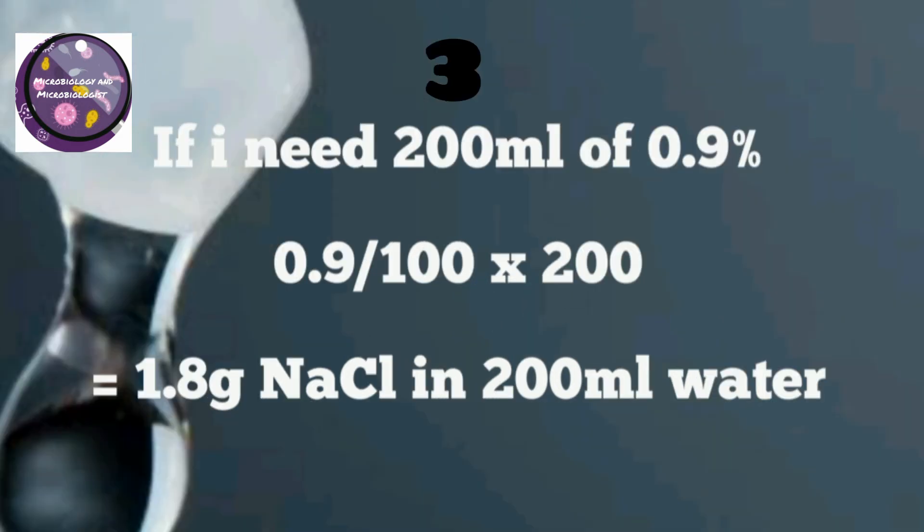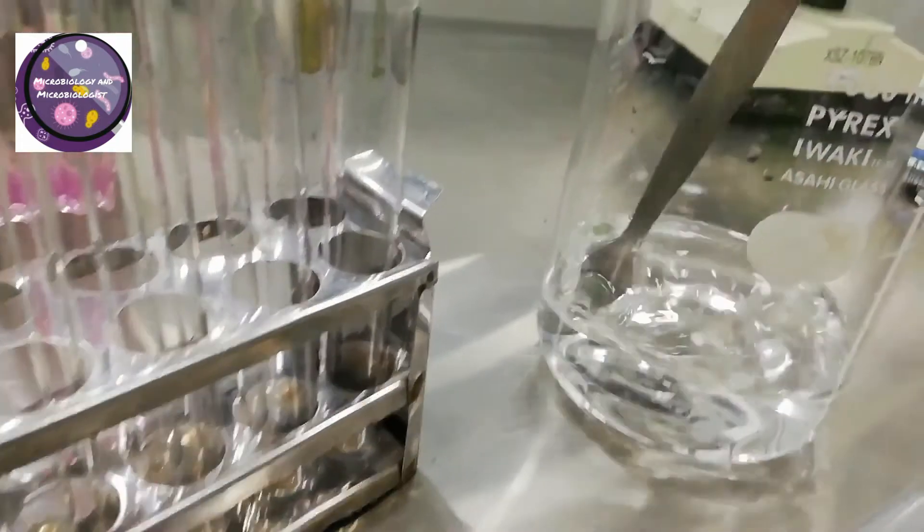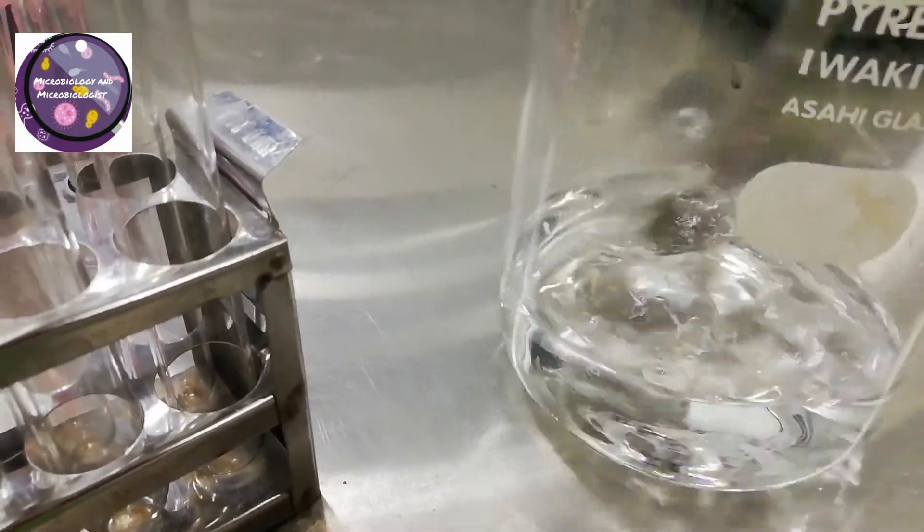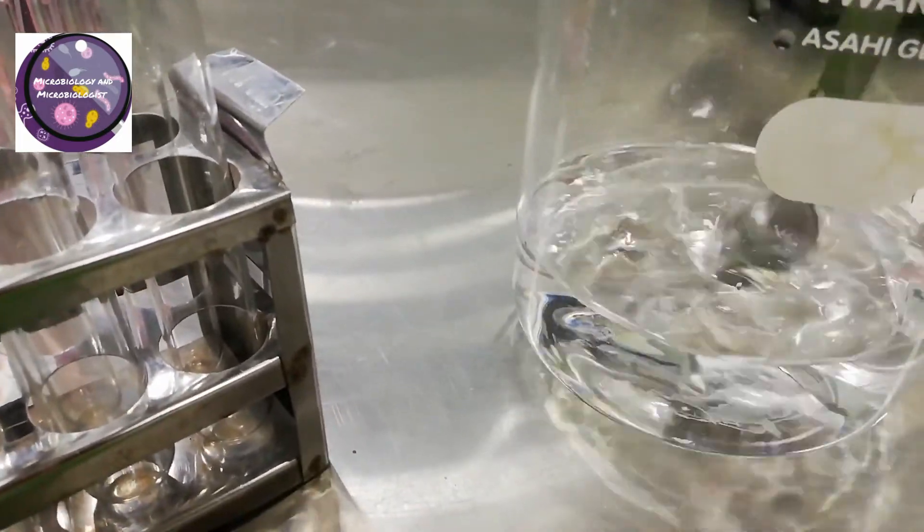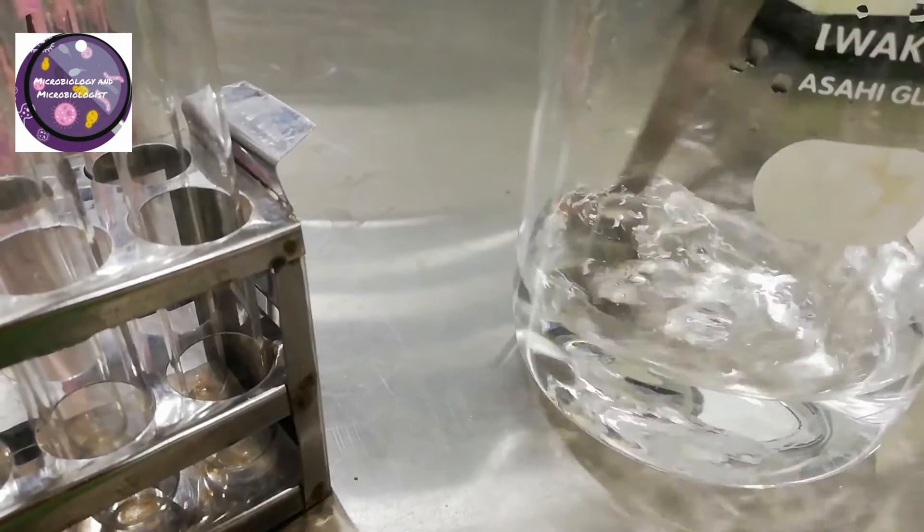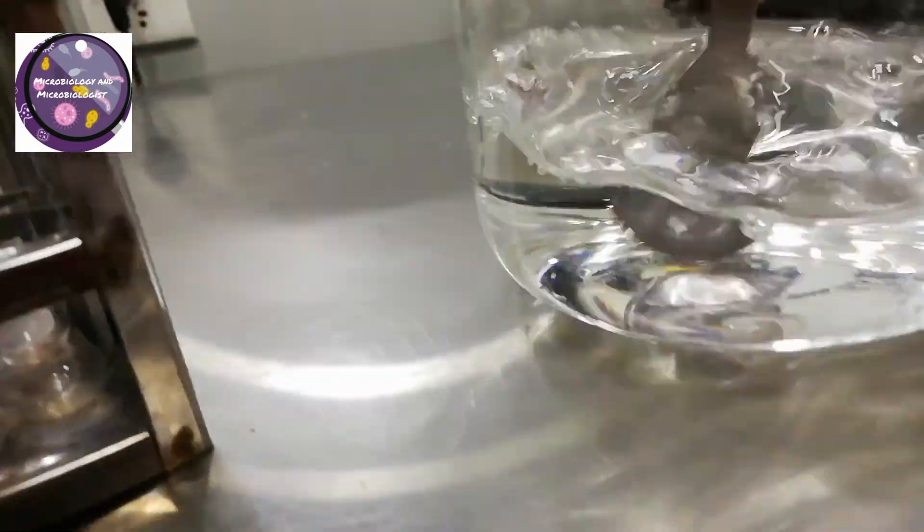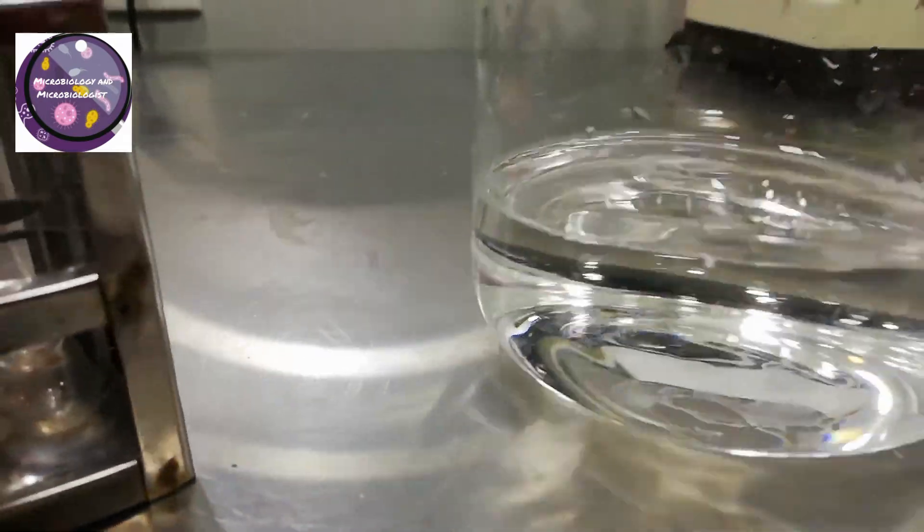Here I am preparing 200ml of 0.9% normal saline, so I have added 1.8 gram of NaCl that is pharma grade, and I am mixing it in distilled water.